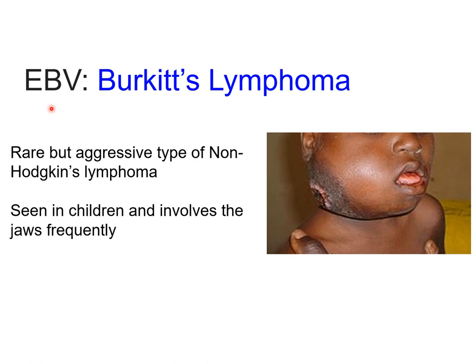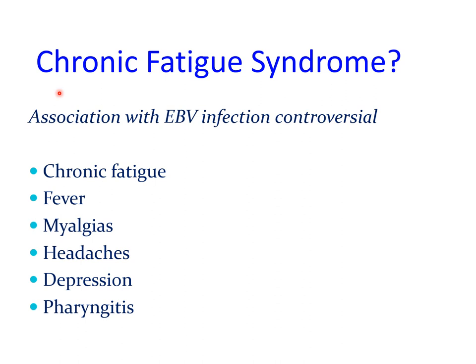Another rare but well-recognised manifestation of Epstein-Barr virus infection is Burkitt's lymphoma — a rare but aggressive type of non-Hodgkin's lymphoma originating from B lymphocytes. More than 90% of tumour cells exhibit antigens to Epstein-Barr virus, and it is mainly seen in children, tending to involve the jaws, with generally a poor prognosis requiring intensive chemotherapy. Epstein-Barr virus infection is also associated with chronic fatigue syndrome, presenting with chronic fatigue, fever, myalgias, headaches, depression, and pharyngitis, though the association is considered weak and possibly controversial.